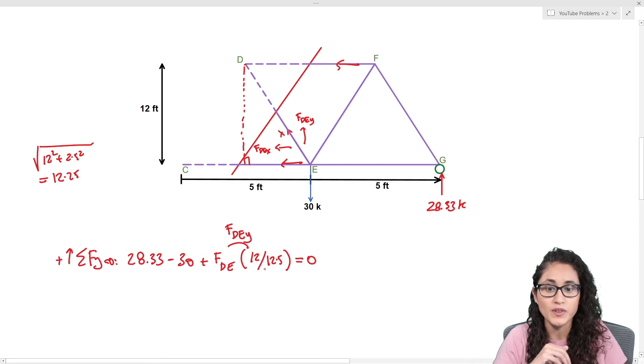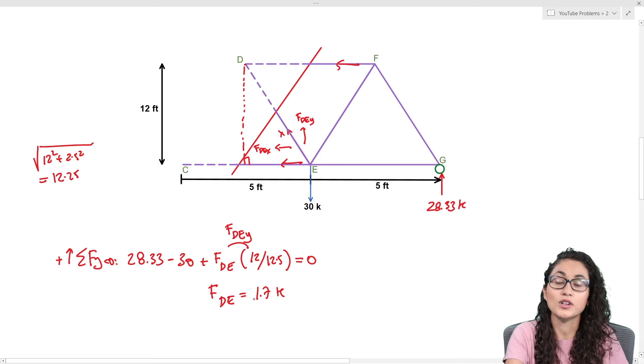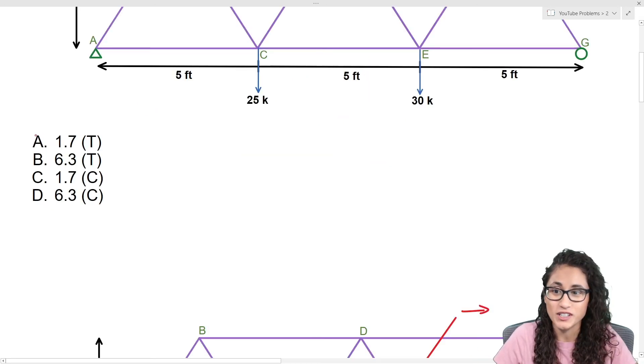If you guys rearrange and solve for force DE, you're going to get 1.7 kips. This number came out to be positive which means it's in tension. If it was negative, that means our assumption is wrong and it should be in compression. If we take a look at the multiple choice, the answer is going to be A. I hope you guys found this video helpful.